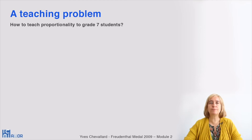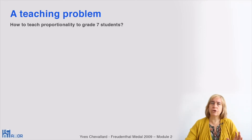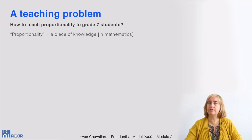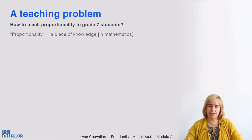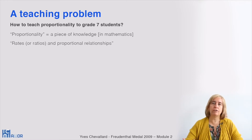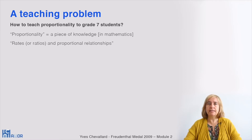Let us start with a teaching problem — that is, a problem that affects teacher practice and is part of the teacher's concerns. For instance, how to teach proportionality to 7th graders. We assume this as a mathematical piece of knowledge that appears in the curriculum under different possible expressions: just proportionality, or ratios of proportions, or proportional relationships, etc. This is what we call a piece of knowledge to be taught.